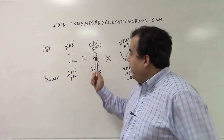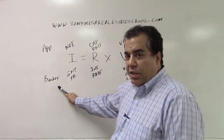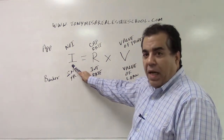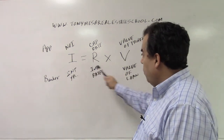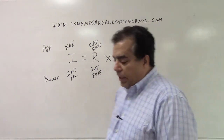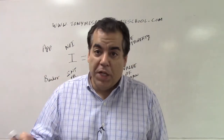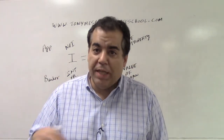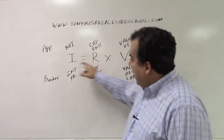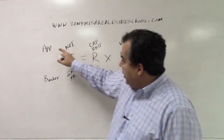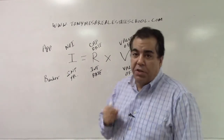Irv the Appraiser and Irv the Banker are cousins — they look the same. I = R × V, written exactly the same way, but they're not brothers, they're cousins. You write it the same way — I = R × V — whether you're dealing with Irv the Appraiser or Irv the Banker. But the letters mean different things.